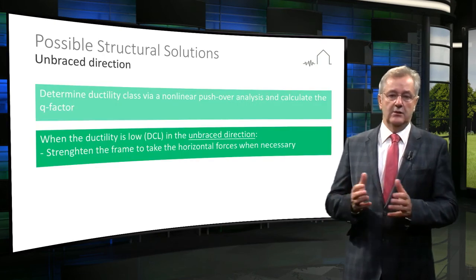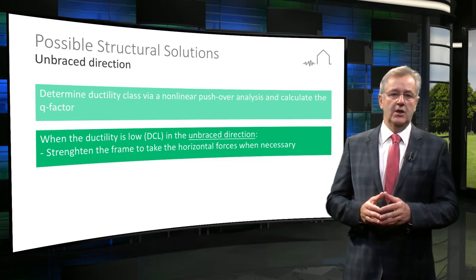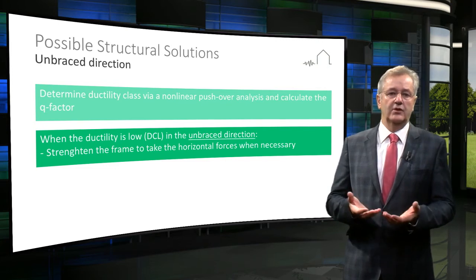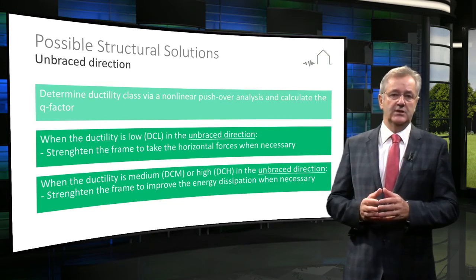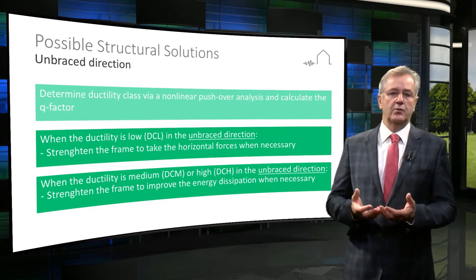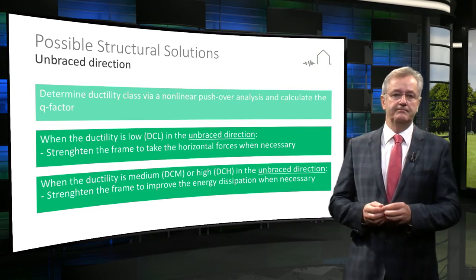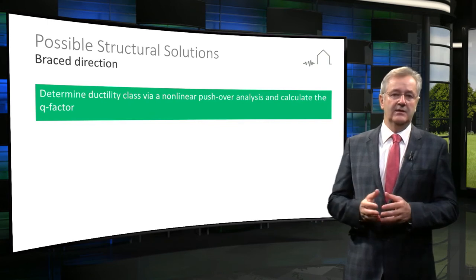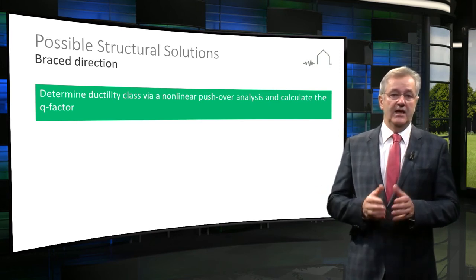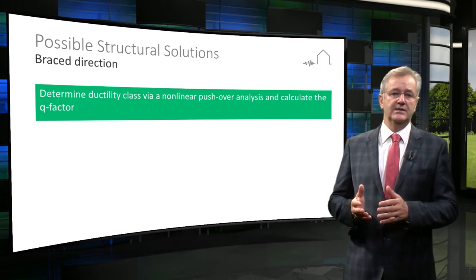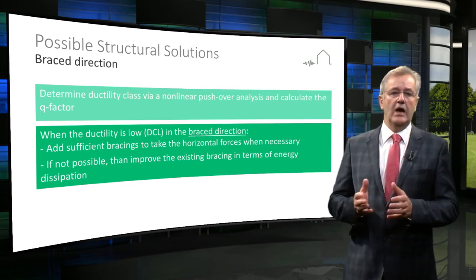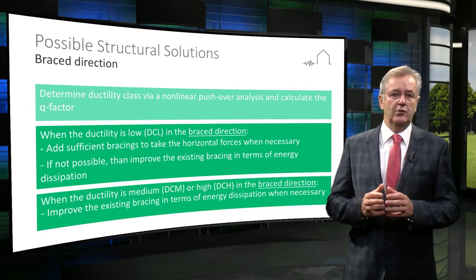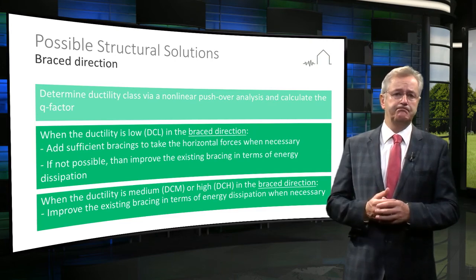When the ductility class is low in the unbraced direction, you have to strengthen the frame when necessary in order to take the horizontal forces. When the ductility class is medium or high in the unbraced direction, you have to strengthen the frame to improve the energy dissipation in order to take the horizontal forces. When the ductility class is low in the braced direction, you have to add sufficient bracings to take the horizontal forces when necessary. If this is not possible, you can improve the existing bracing in terms of energy dissipation. When the ductility class is medium or high in the braced direction, you have to improve the existing bracing in terms of energy dissipation when necessary.